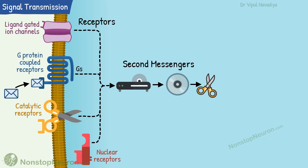For example, GS-protein activates adenylyl cyclase, which in turn increases the concentration of cAMP. cAMP then activates protein kinase A. Thus, there is a cascade of events.